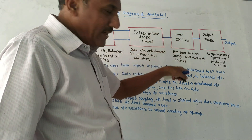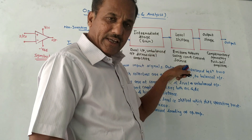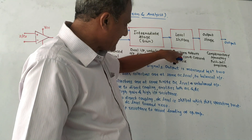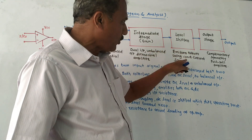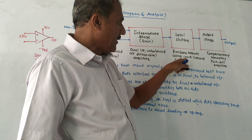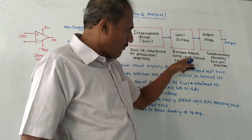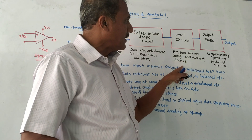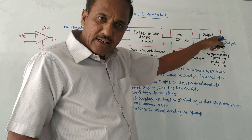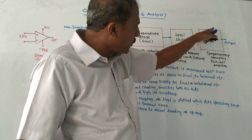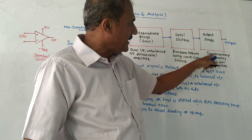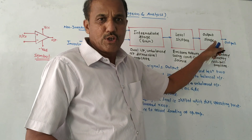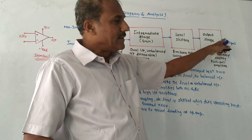The third stage is the level shifter, which is basically an emitter follower circuit designed using a constant current source. The last stage is the output stage — it is a complementary symmetry push-pull amplifier which produces the final output.